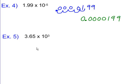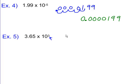One more time: 3.65×10³. This is a large number, so we take 3.65 and move the decimal to the right three places — one, two, and one more — which gives us a trailing zero. Our final answer is 3,650.